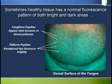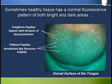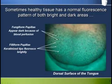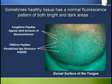The filiform papilla have keratinised tips which fluoresce quite brightly under Velscope. So here we are seeing examples of some of the underlying concepts explained in the science module. Blood is a strong absorber and causes the perceived fluorescence to decrease, and keratin fluoresces which causes the perceived fluorescence to increase.